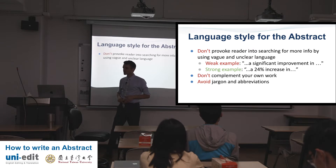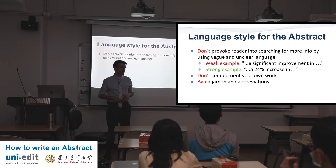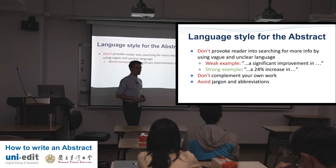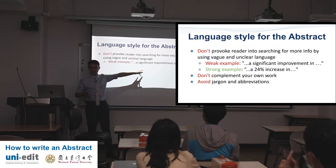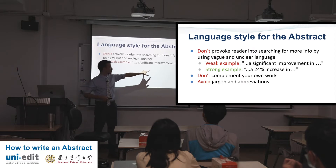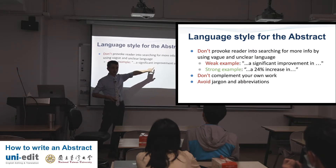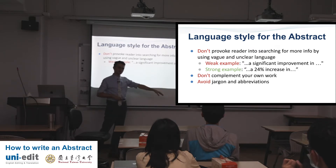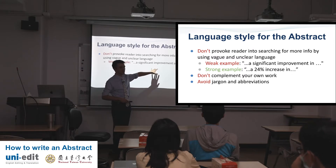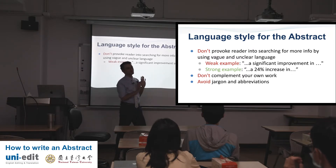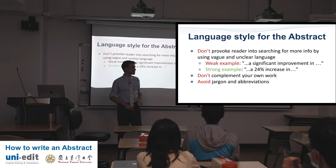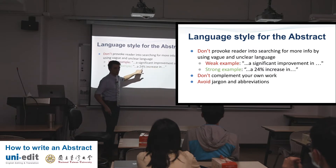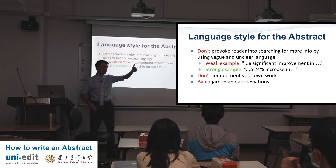Don't provoke the reader into searching for more information by using vague or unclear language. For example, 'a significant improvement in' — this sounds really academic, but what does that mean? 5%? 20%? 100%? You should definitely do it, or maybe you should do it — this is really vague and tells the reader 'oh, you need to read my article.' Just tell them: 'a 24% increase in.' Don't tell me it's important — I know it's important by your data. Your abstract will have one or two key data points. Don't compliment your own work — 'our groundbreaking study,' 'our magnificent' — stuff like that.